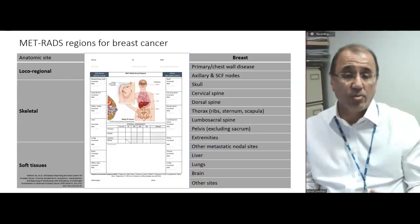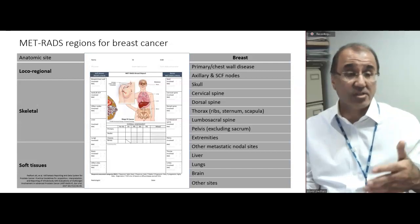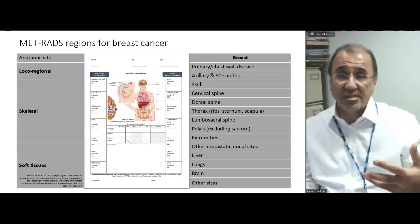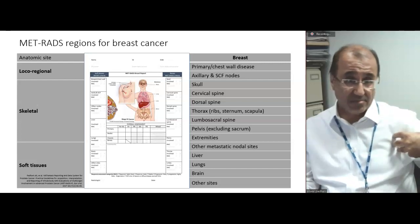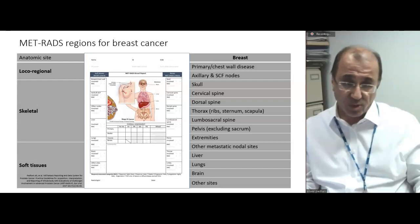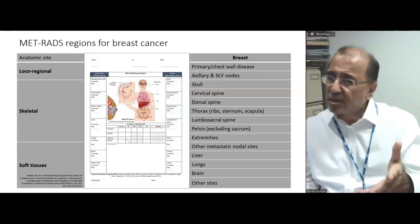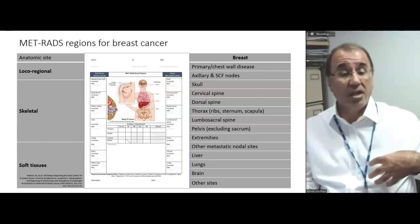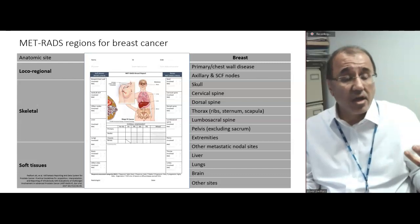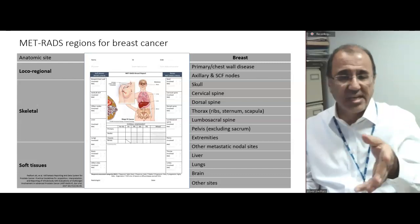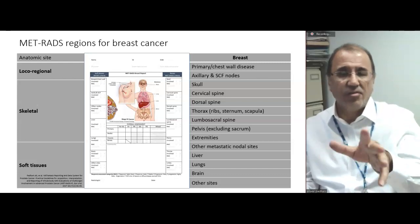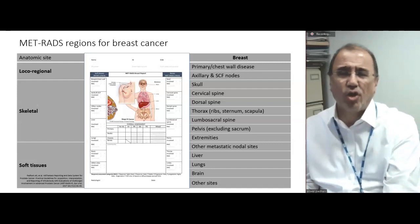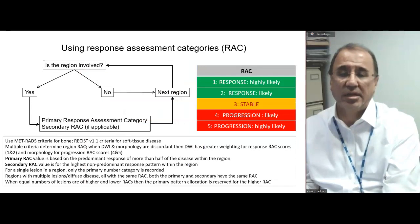For breast cancer, the patterns are different. Local-regional disease will be breast and axilla. Spine is the usual skeletal sites. Soft tissue sites include liver, lungs, brain, and other sites. You can see how we have adjusted the common anatomical patterns based on what we already know about each disease and how it behaves.